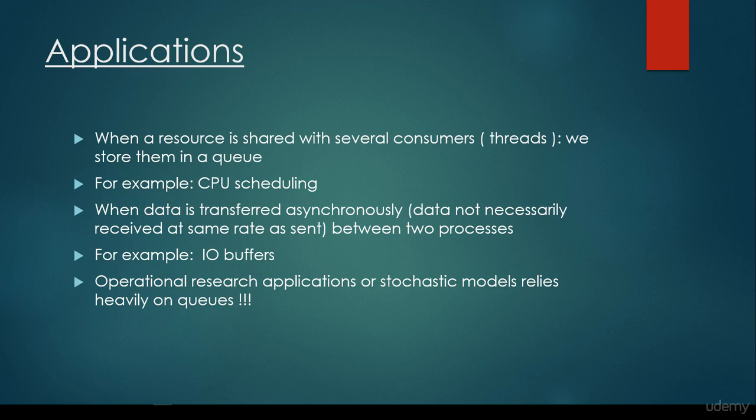For example, CPU scheduling. Or when data is transferred asynchronously, which means that data not necessarily received at same rate as it's being sent between two processes, for example, then we are going to store the data in a queue abstract data type. For example, in input-output buffers.